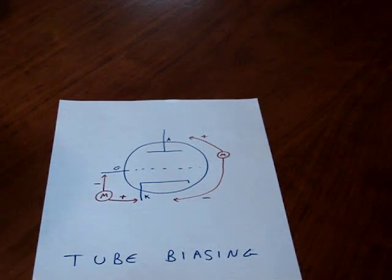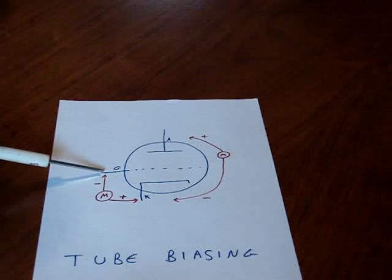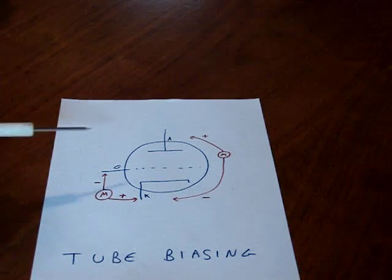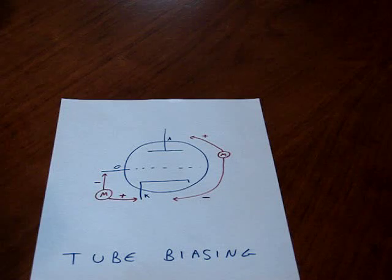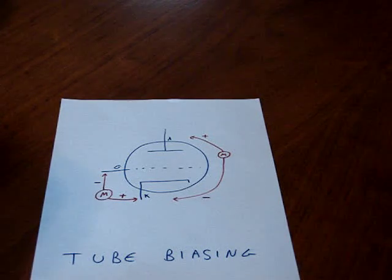So how do we do this? If the grid is ground, then no signal can pass because your audio signal in would be hooked to ground and that won't work. So how do we do it?